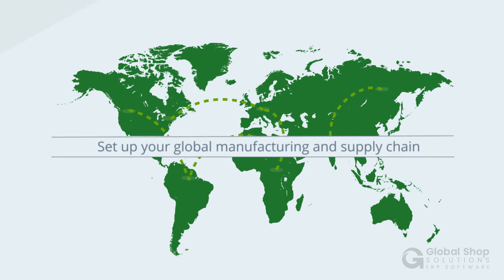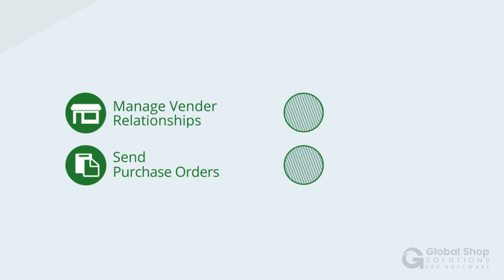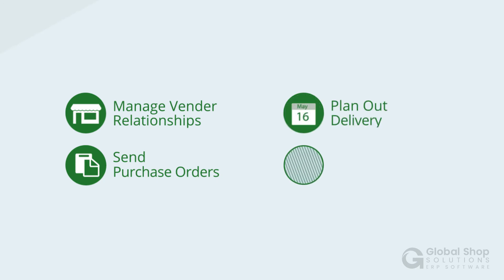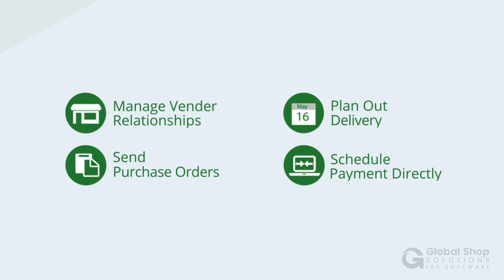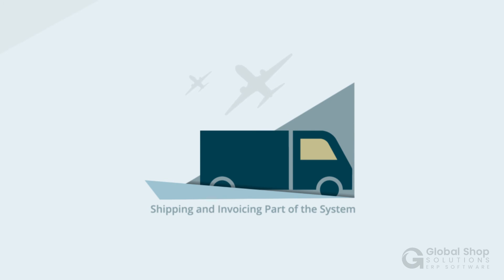You can use ERP to set up your global manufacturing and supply chain, manage vendor relationships, send purchase orders, plan out delivery timelines, and schedule payment directly through the system — quote to cash and everything in between. Once you have the materials you need, ERP can handle inventory tracking and production planning. When your product is ready for the shelves, shipping and customer invoicing are part of the integrated system.